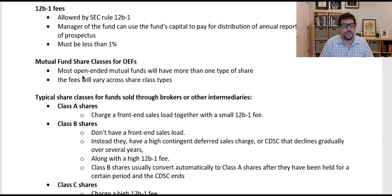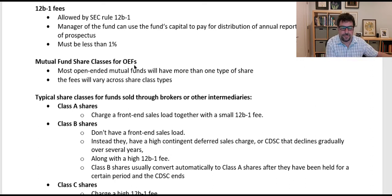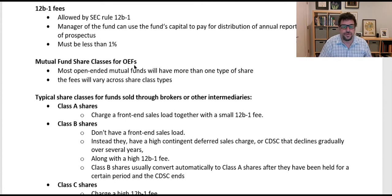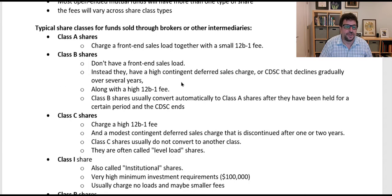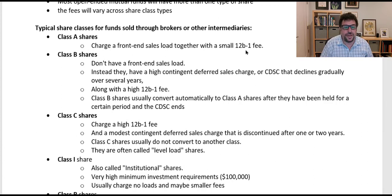Let's talk about mutual fund share classes for open-ended funds. Closed-end funds have a single class — you're buying from someone else who owns it. But an open-ended mutual fund can have more than one type of share, and the fees vary across different share classes. For example, Class A shares charge a front load together with a smaller ongoing fee.